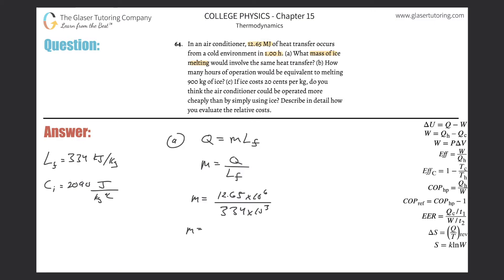So there's 12.65 times 10 to the 6, divided then by 334 times 10 to the 3rd. And we have about 37.9 or so, 37.9 kilograms of ice.